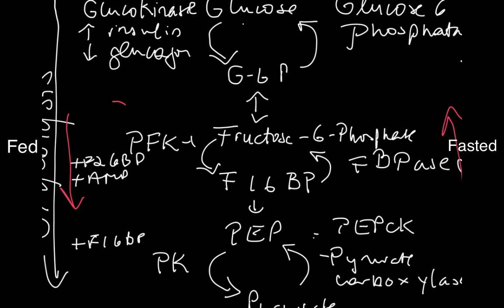This part of the pathway takes fructose 6-phosphate to fructose 1,6-bisphosphate. In the fed state, the enzyme is PFK1, or phosphofructokinase 1. This enzyme is positively regulated by fructose 2,6-bisphosphate, which comes from the enzyme PFK2. There's another video that discusses the regulation of PFK2 and PFK1.